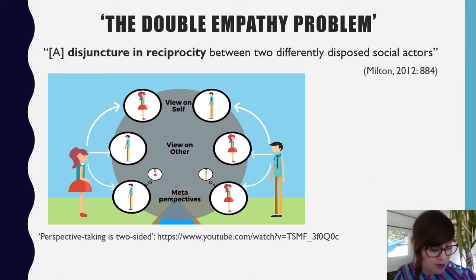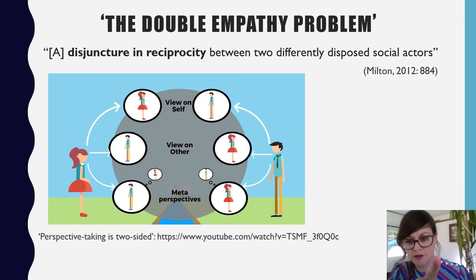And using the double empathy problem, Brett Heasman and Alex Gillespie of the London School of Economics explored how this might be measured in terms of understanding and misunderstandings between autistic individuals and their family members. So there's a link, hopefully you can see, on the slide that links to a video, an animation that Brett Heasman made describing this study, which I highly recommend if you haven't seen it. So they used an adapted framework from Laing's 1966 IPM model of intersubjective perspective-taking, and this is what we have in the image here.